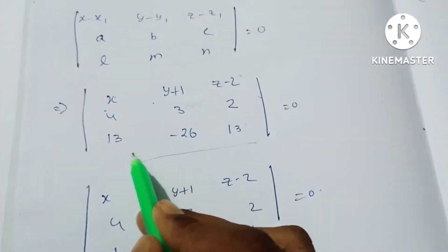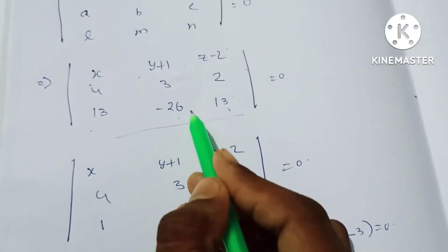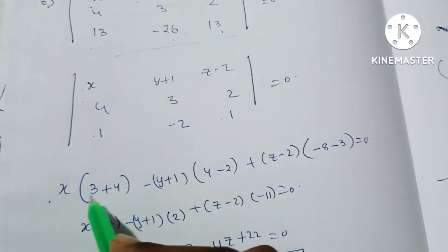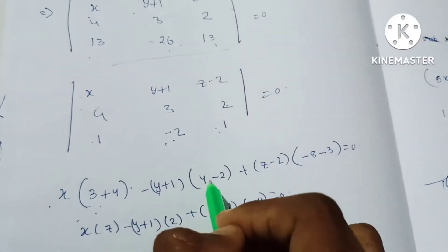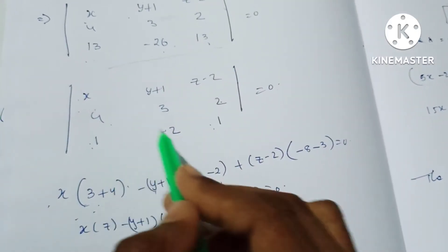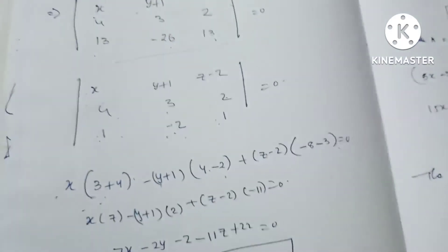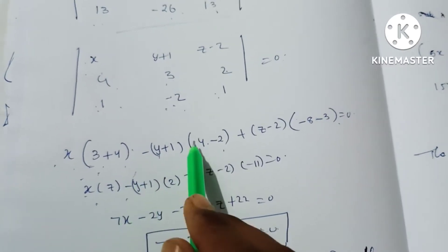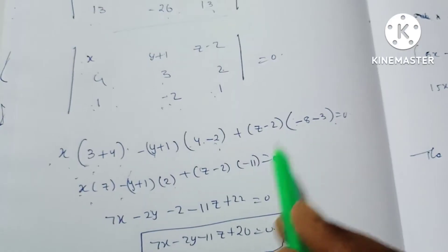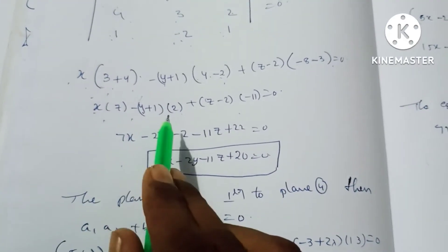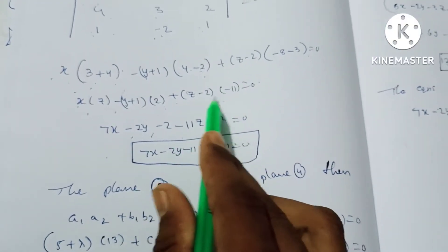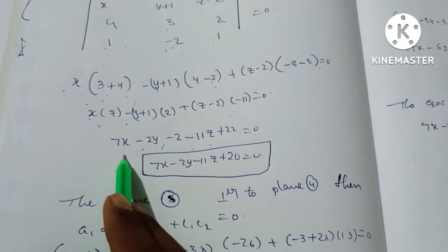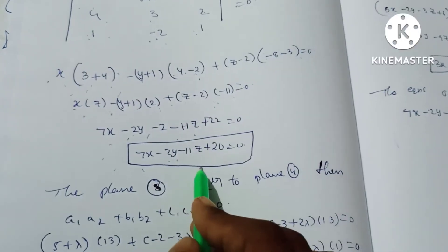We find the SD line equation using the determinant method with values 13, -26, 13 and direction ratios. Expanding gives: x(3·2 - (-2)·2) - (y+1)(4·2 - 1·2) + (z-2)(4·(-2) - 1·3) = 0, simplifying to 7x - 2(y+1) - 11(z-2) = 0, so 7x - 2y - 11z + 20 = 0.